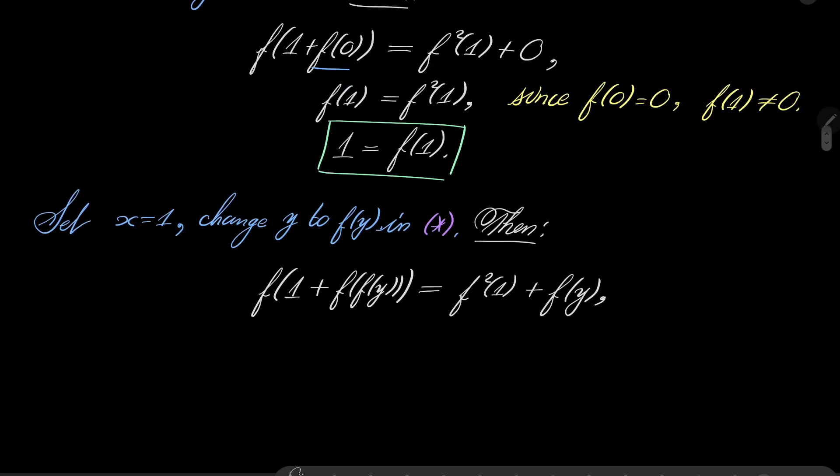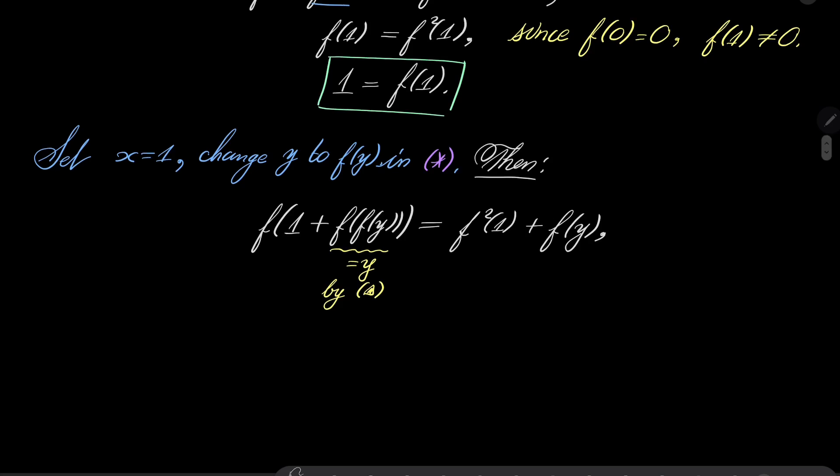Now, let's see what happens. By our condition triangle, this f of f of y is just y. And f of 1 as we know it, f of 1 is 1. So, we have this. And I will write it in a different color and I will put quantifier.